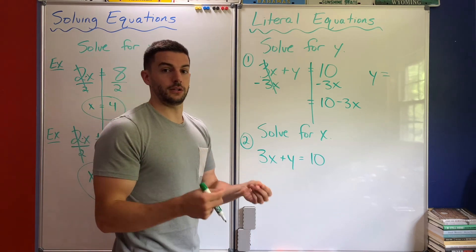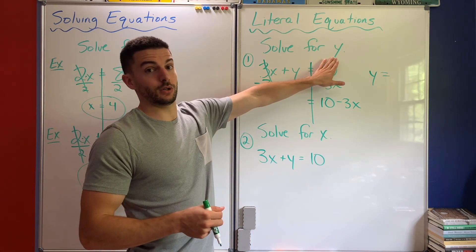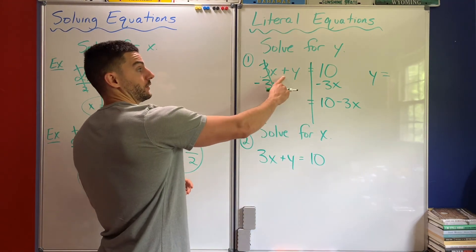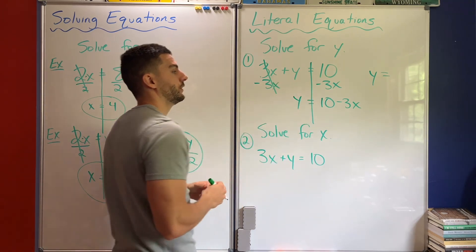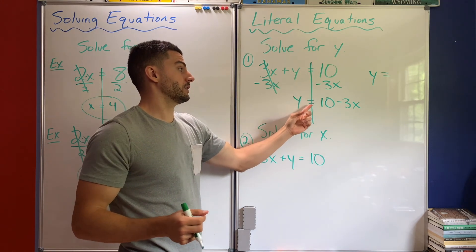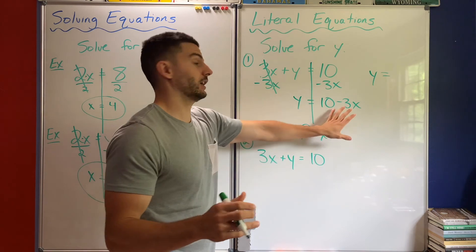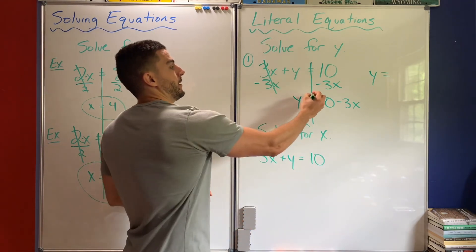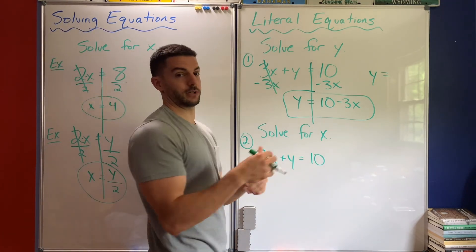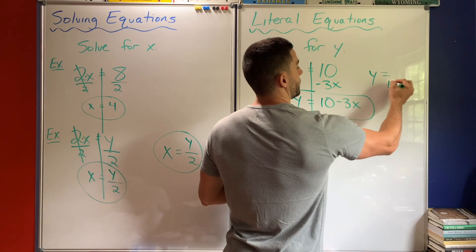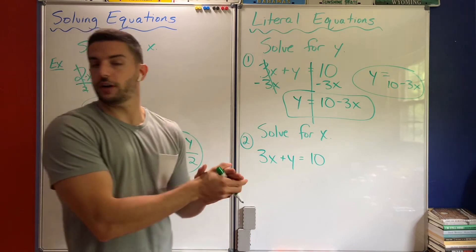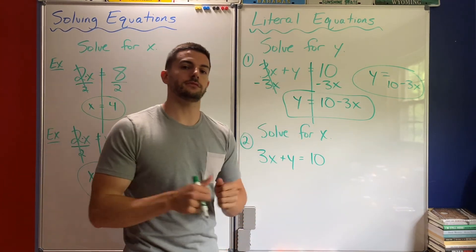Your big goal is to get the variable it's asking for by itself. When you've done that, you're all done. All that's left over here is plus y, or just y. Once y is by itself, I have y equals whatever — I'm done, no matter how ugly it is on the other side. So my answer is y equals 10 minus 3x.